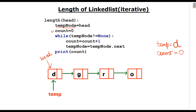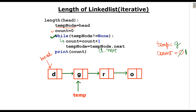First we will enter into the while loop, where it will check whether the temporary node is not equal to None. Here the temporary node is pointing towards D, so it will go inside the while loop and count will get incremented by 1. And temp node at D dot next is at G. It will go to the while loop again and check whether temporary node is not equal to None. Temporary node is pointing towards G, so it will go inside the while loop and count will get incremented by 1, which is 2.